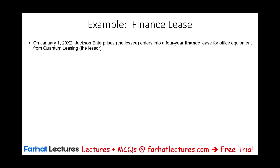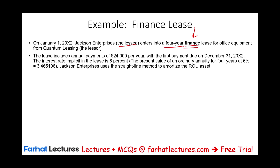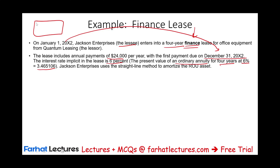Starting with the example: on January 1st, year X2, Jackson, the lessee, enters into a four-year finance lease for office equipment from Quantum Leasing, the lessor. The lease includes an annual payment of $24,000 per year with the first payment due December 31st, X2 — so the first payment is due a year from today. The rate implicit in the lease is 6%, and the present value of an ordinary annuity factor for four years at 6% is 3.465106.